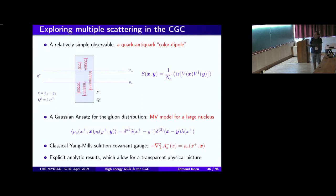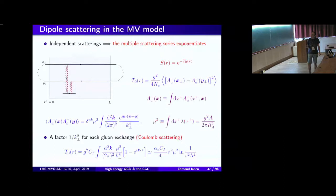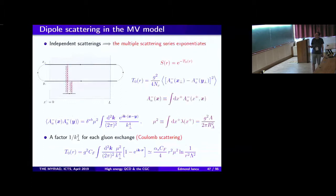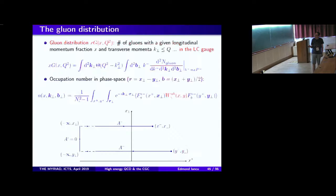Now I return to the point where we stopped. We have the solutions of the classical field and I would like to compute the expectation value of the Wilson line. Dipole scattering in the MV model: the dipole propagates with one leg at x-perp and the other at y-perp through a medium of size L, undergoing in general multiple scattering — single scattering and multiple scattering. What is specific about having independent color charges is that the multiple scattering series simply exponentiates.